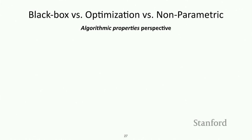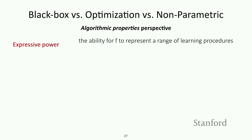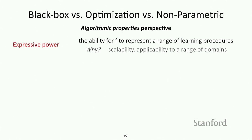I think there are two properties that are most important as we think about developing new meta-learning algorithms. The first is expressive power: the ability for the function f to represent a range of learning procedures as a function of your training dataset. This is important because as you get larger and larger meta-training datasets, you'll be able to produce a more flexible range of learned optimizers. If you can only represent a small class of algorithms, you may not be as effective when moving towards broader meta-training datasets.